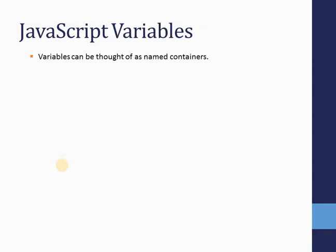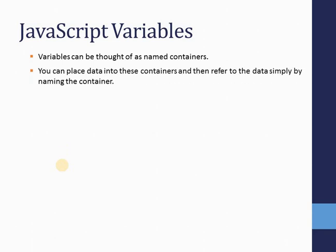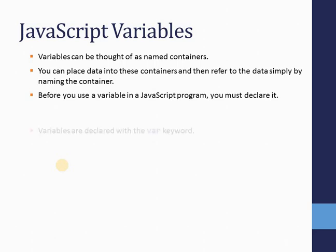A JavaScript variable can be thought of as a named container where you put your stuff — and in programming, our stuff is our data. A variable is a kind of container in which we are going to put our data. You can place your data into this container and refer to the data simply by naming the container. Whenever you want to fetch the data, you just refer to that container.